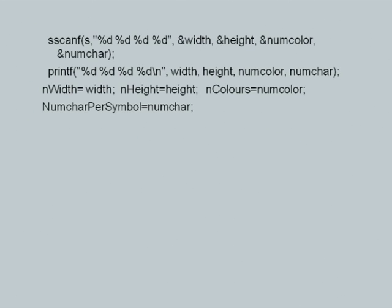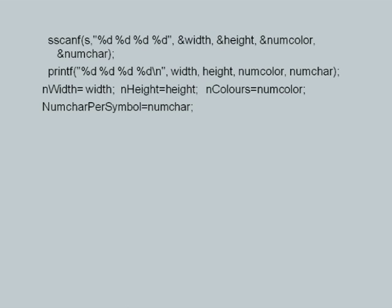Going to the previous slide: after having read the values of width, height, numcolor, and numcar, observe that we are using scanf. I simply print it. These assignment statements have no real purpose — I could have continued to use width, height, numcolor, and numcar as used to read these values. It so happened that these scanf statements were introduced later, but for the rest of the algorithm I was using n_width, n_height, etc. So I just quickly put these assignment statements to get values into the right variables used in the subsequent part of the algorithm.